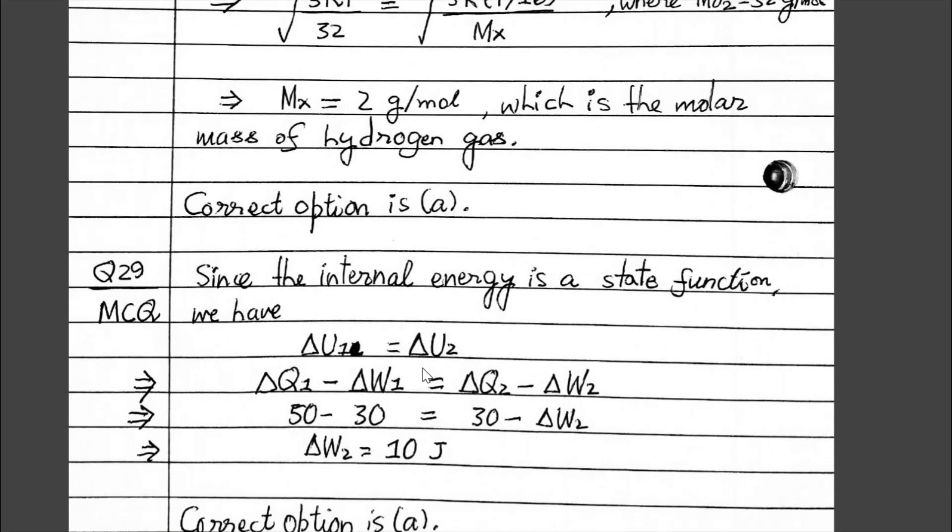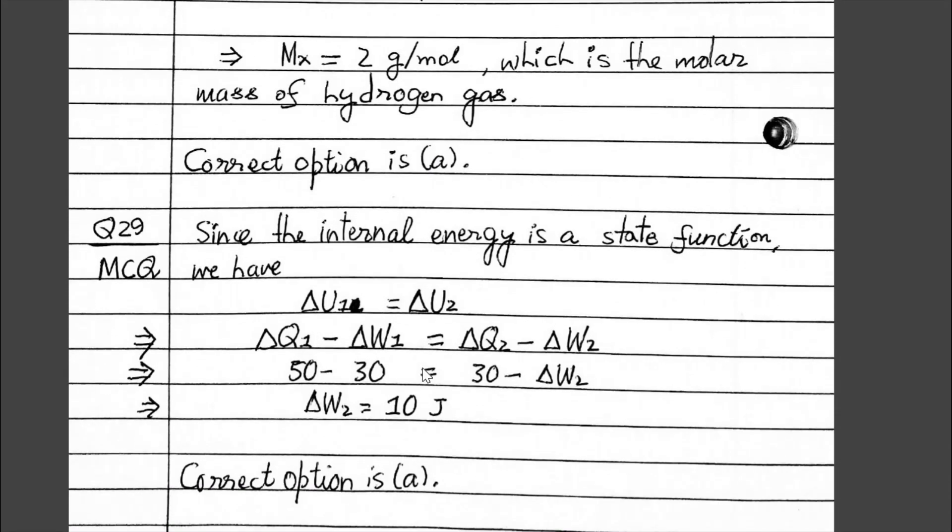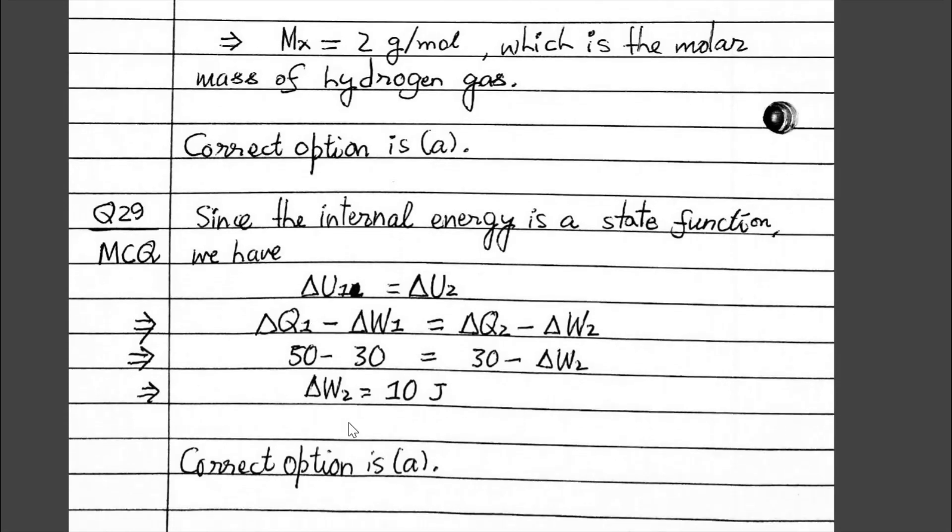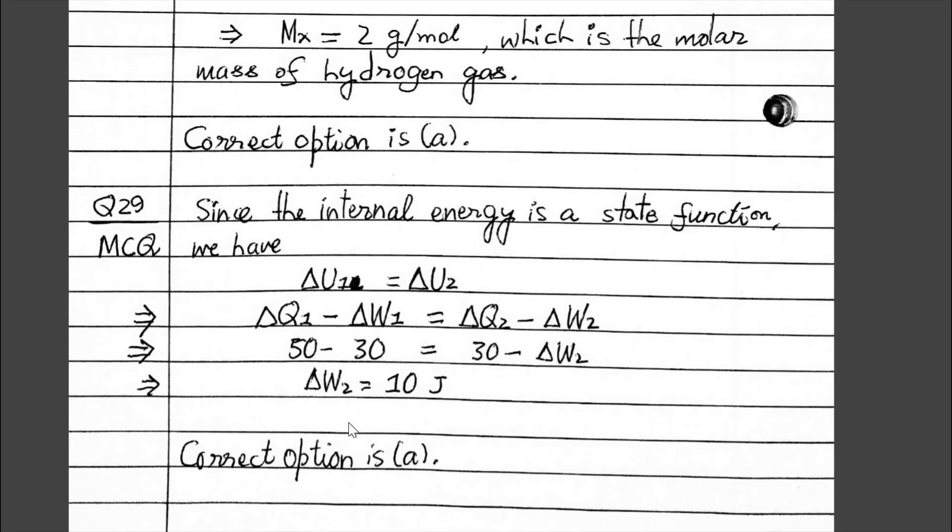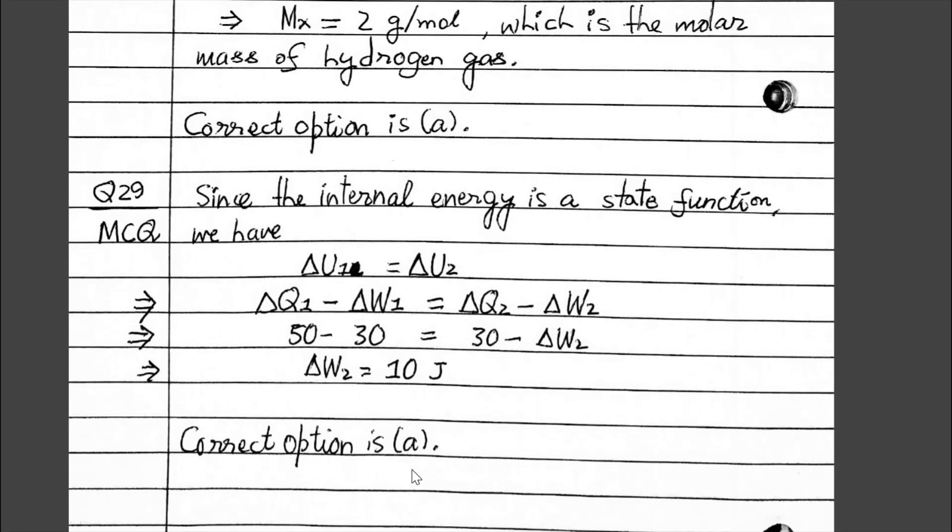The second question is from the first law of thermodynamics. The first law basically says that delta Q equals delta U plus delta W. Since in the question delta U1 equals delta U2, by using the first law we get the work done W2 is 10U. So the option is A.